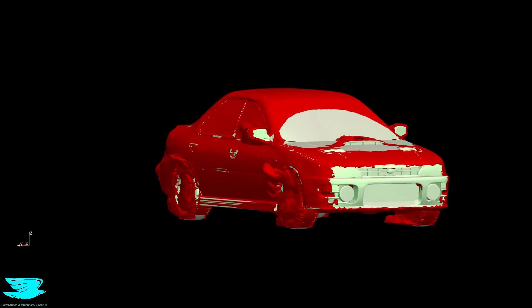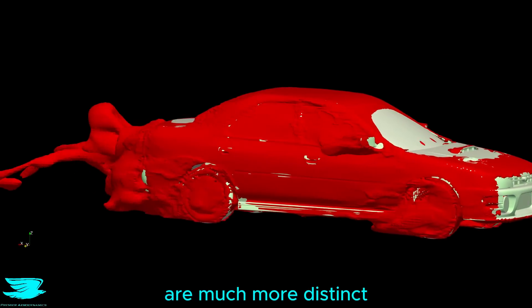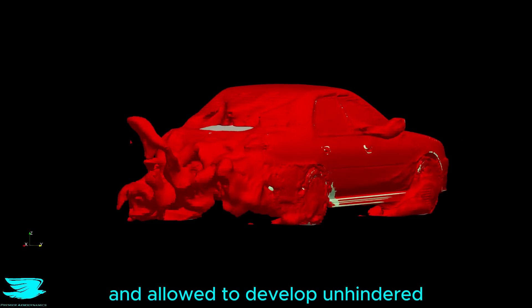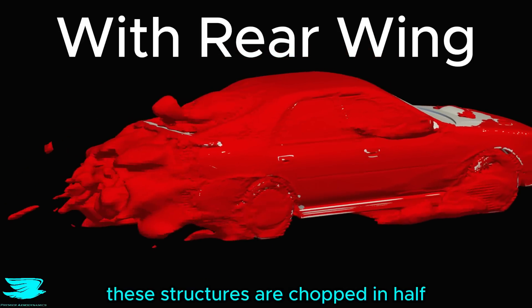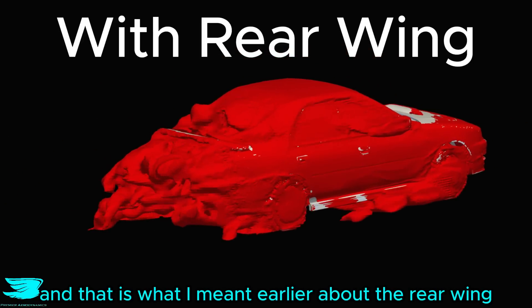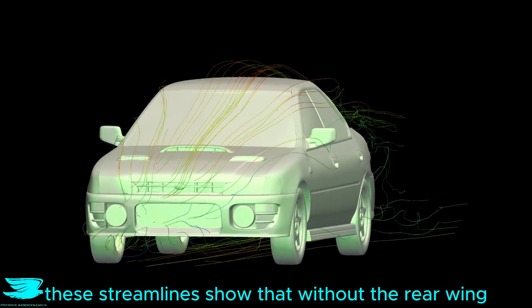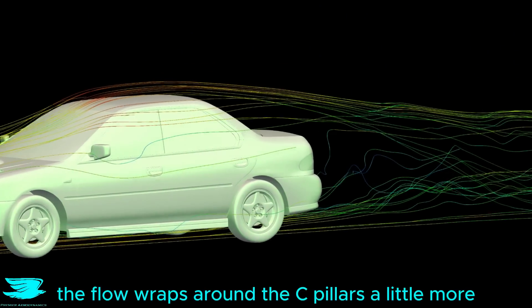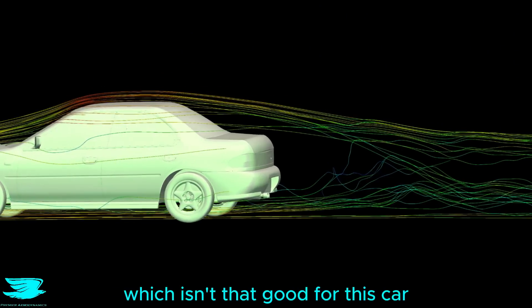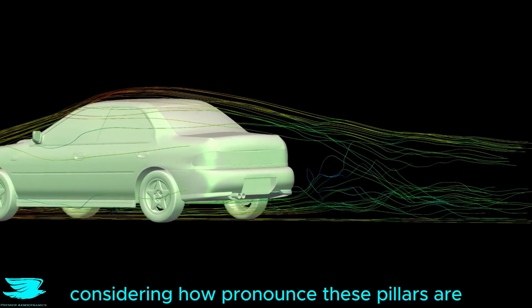Without the rear wing, the drag structures from the rear window are much more distinct and allowed to develop unhindered. With the rear wing, these structures are chopped in half, and that is what I meant earlier about the rear wing stabilizing the flow. These streamlines show that without the rear wing, the flow wraps around the C pillars a little more, which isn't that good for this car considering how pronounced these pillars are.